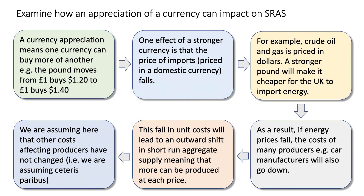Build the chain of reasoning, give good examples, and explain what the impact on costs might be. Here's our second example: let's examine how an appreciation of a currency — the currency going up in value — can impact on aggregate supply in the short term. Start with the definition: currency appreciation means one currency can buy more of another, for example the pound rises against the US dollar.